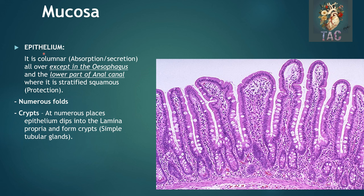In detail, the epithelium is generally simple columnar, for the purpose of absorption and secretion. You can see this epithelium is generally simple columnar with a large number of goblet cells, which are single glandular cells secreting mucus onto the surface. The exception to this columnar epithelium is the esophagus and the lower part of the anal canal, where stratified squamous non-keratinized type of epithelium is present. This epithelium shows numerous folds and crypts at numerous places — the epithelium dips into the lamina propria to form the crypts, which are simple tubular glands.